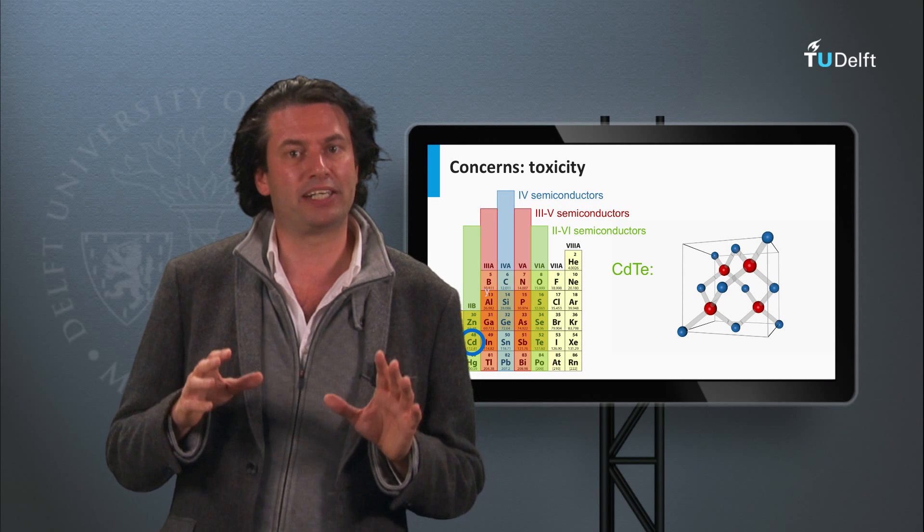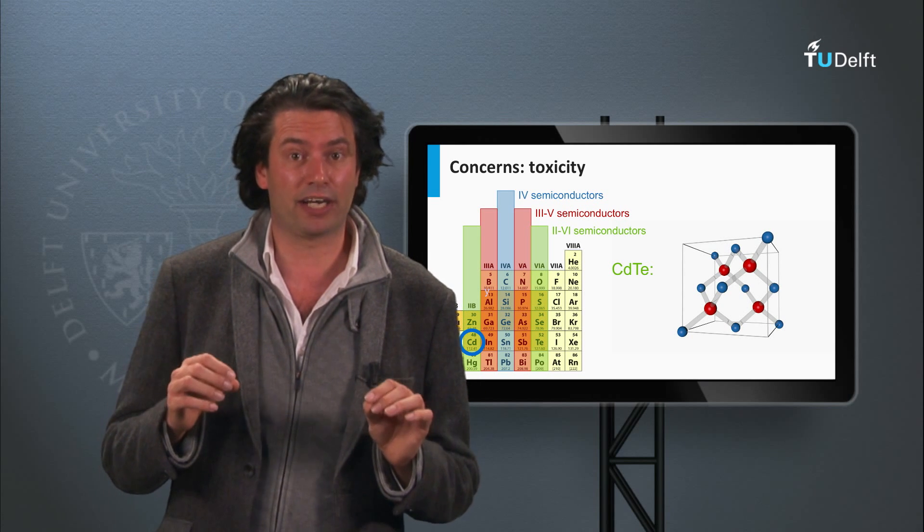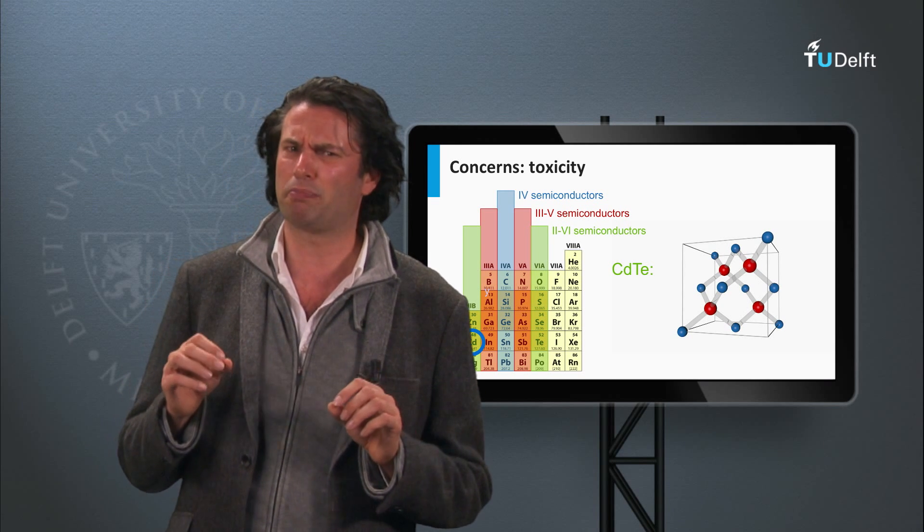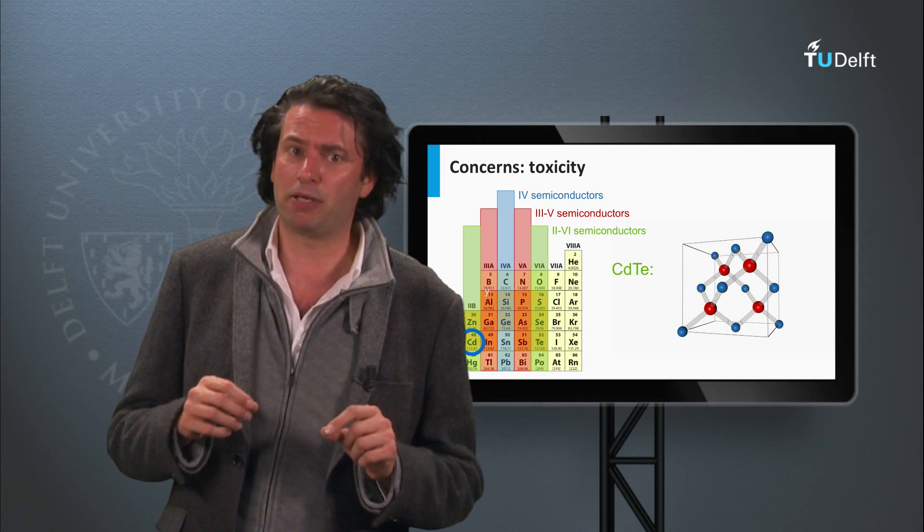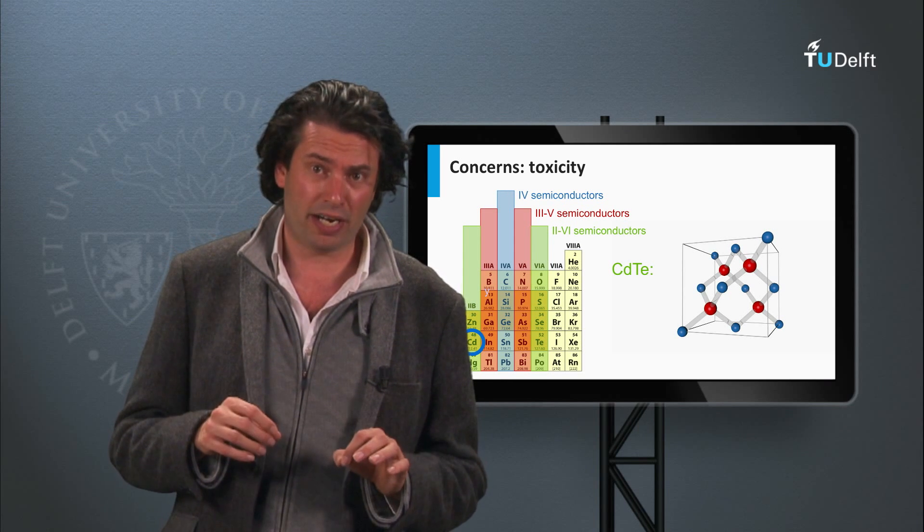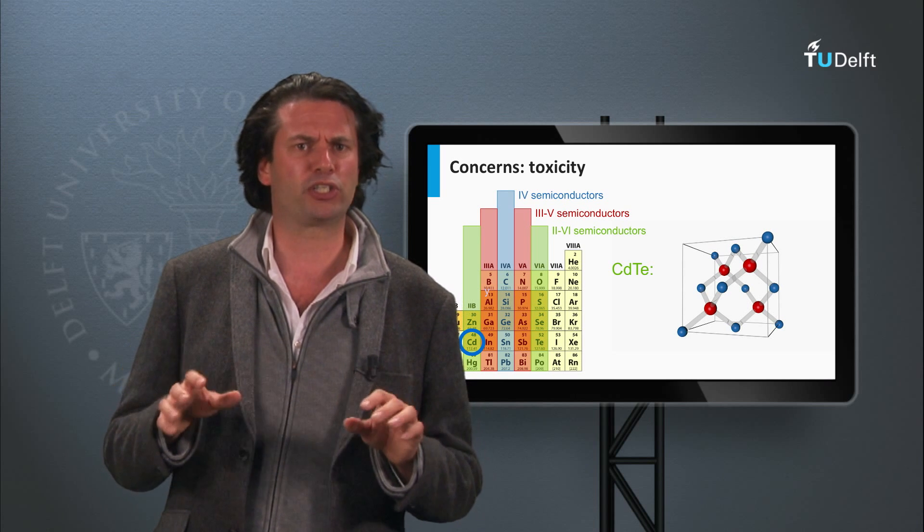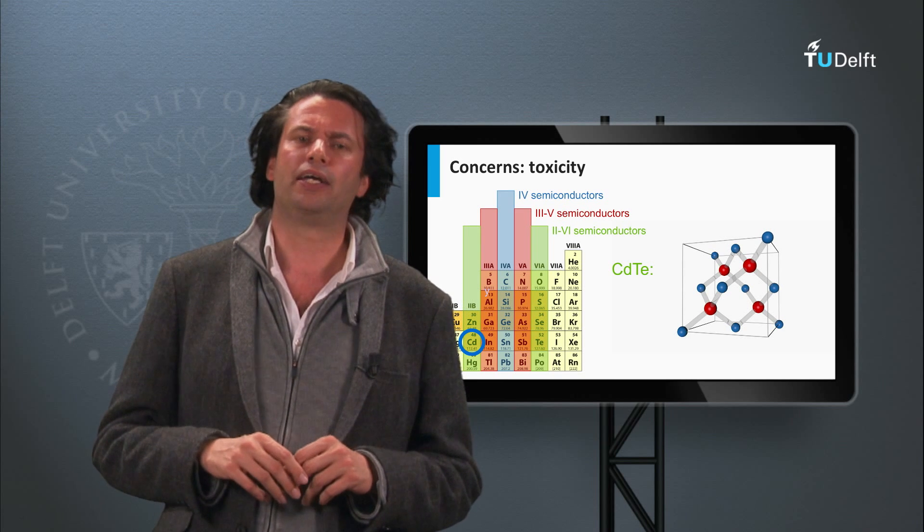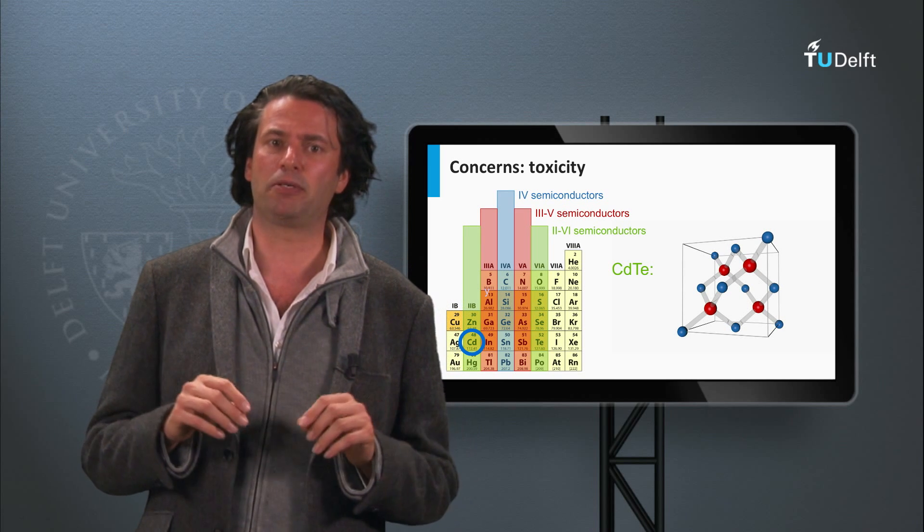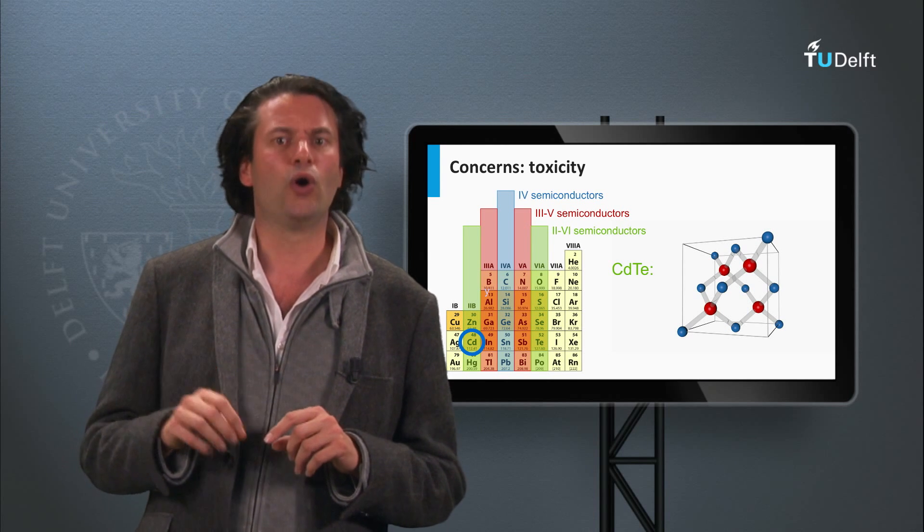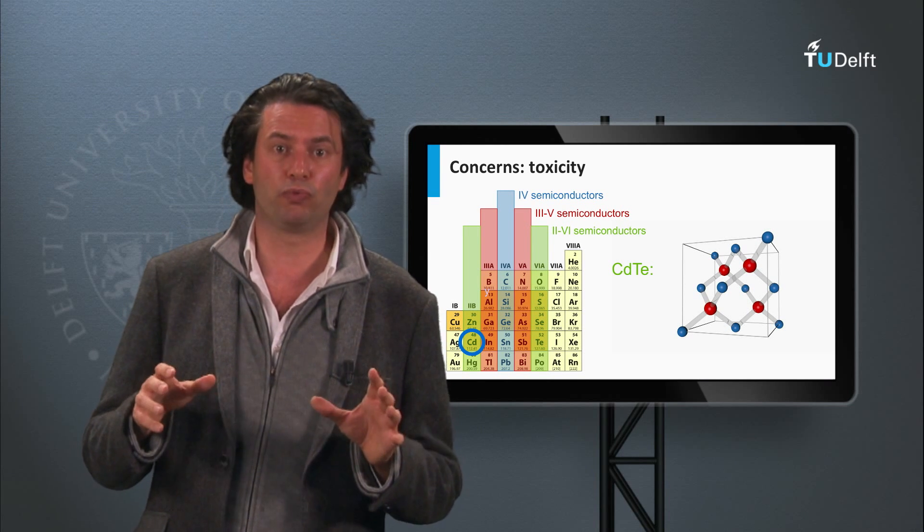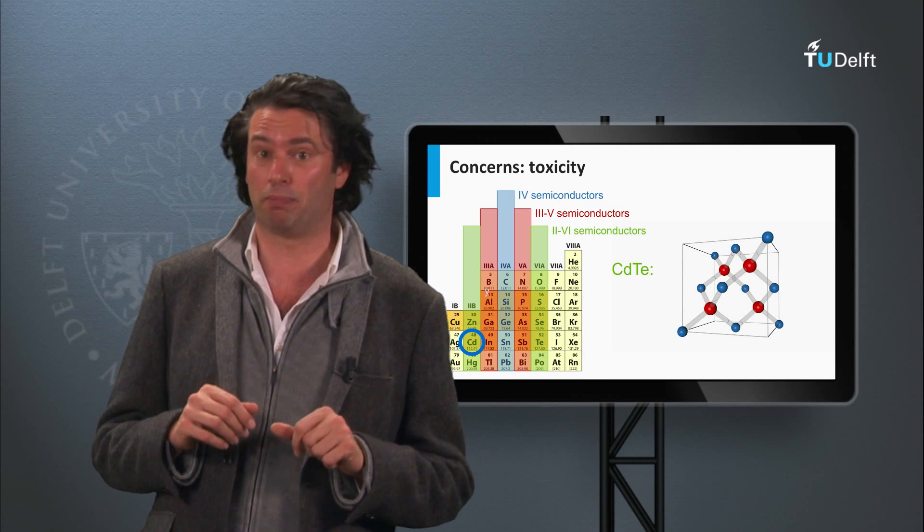An important aspect to be addressed is that the cadmium telluride solar cells contain the toxic material cadmium. However, the insoluble cadmium compounds like cadmium telluride and cadmium sulfide are much less toxic. It is important to prevent cadmium entering into the ecosystem. The question is whether the cadmium telluride modules would be a main source of cadmium pollution.